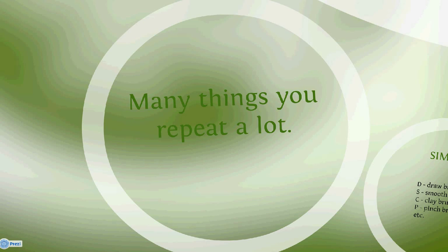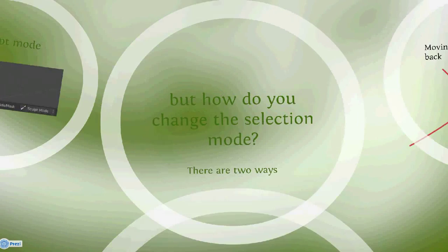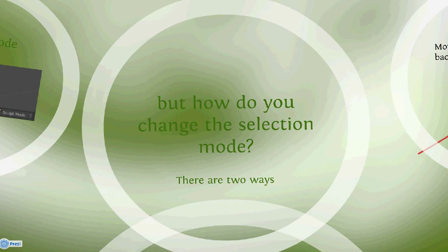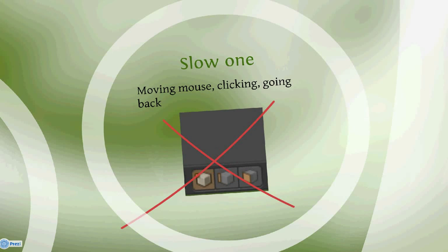You sometimes select edges, sometimes faces or vertices. You do that a lot. But how do you change the selection mode? There are two ways. The slow one and the fast one. As many people do, they go to the bottom of the 3D view space and just press the different icon. But when you're repeating that for a few hours, you waste much time only moving your mouse pointlessly.